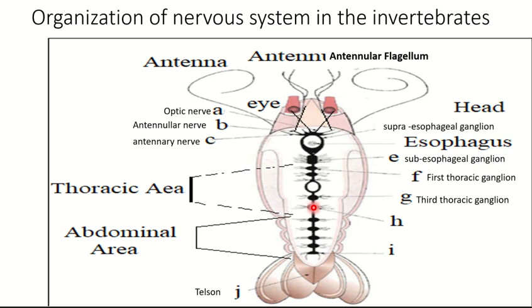In the abdominal area we have six abdominal ganglia: the first, second, third, fourth, fifth, and sixth. The last one controls the telson of the shrimp — this is the telson.